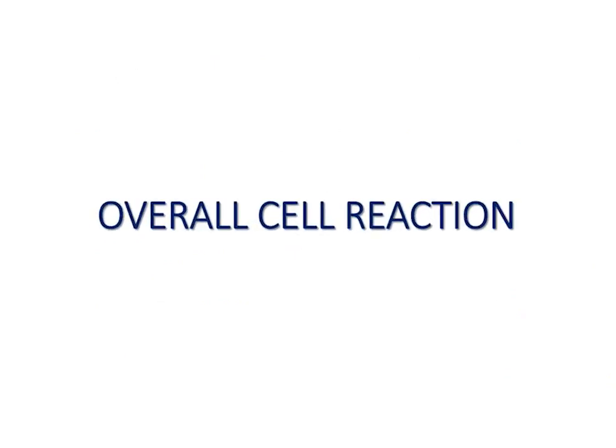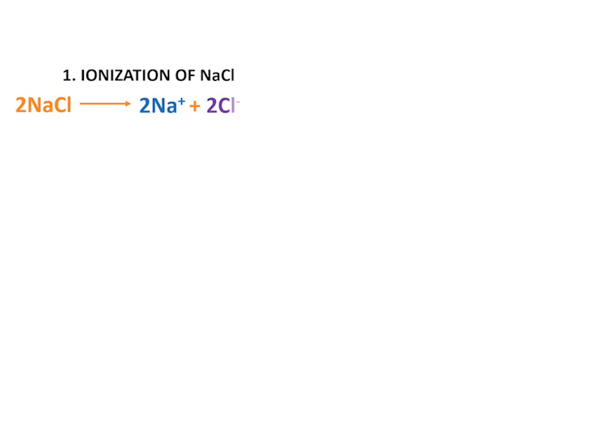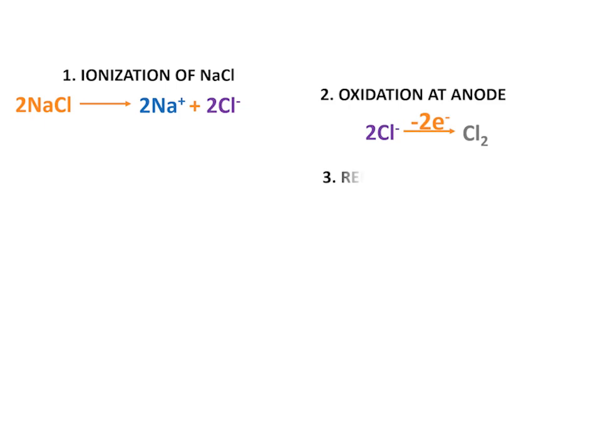Now summing up the overall cell reaction of anode and cathode. When brine is subjected to electrolysis, the first step is the ionization of the salt, resulting in sodium positive ions and chloride negative ions. Chloride ions are oxidized and by the loss of electrons form chlorine gas over the anode. Sodium ions are reduced at the cathode by the gain of electrons and form metallic sodium.